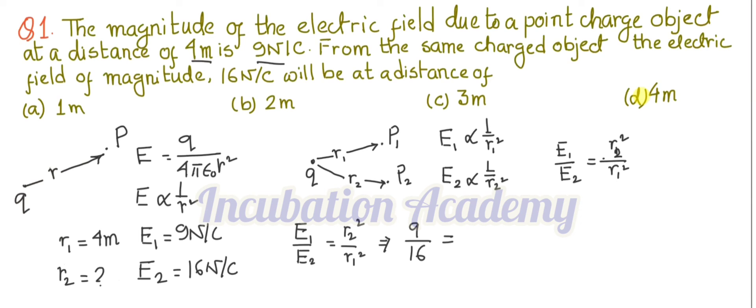What is R2? R2 we have to find out. What is R1? R1 is 4 square. Very simply, 4 square is 16, so 16 and 16 cancel out and R2 square is equal to 9.